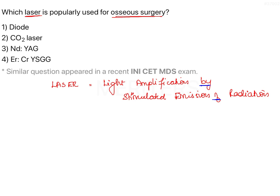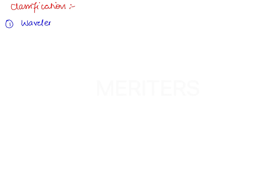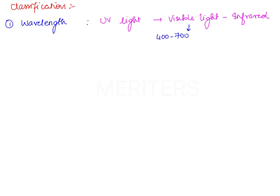To choose which laser is used for osseous surgeries, let's first discuss the classification of lasers. Lasers are classified based on wavelength into three types: those effective in the UV light spectrum, the visible light spectrum (400–700 nanometers), and the infrared spectrum (beyond 700 nm). Most lasers operate at one or more wavelength spectrums.